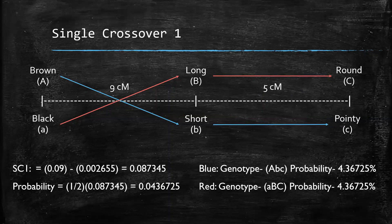Now let's look at the map. To find our SC1 probability, we subtract our 9 cM by the DCO value we found earlier, which was 0.002655, giving us 0.087345. Since there are two possible single crossover 1 events, we multiply by one half to get 0.0436725 — meaning the probability of getting the gametype big A, little B, little C through a single crossover 1 event is 4.36725%.